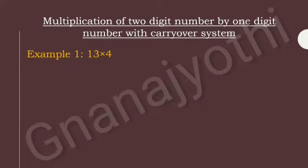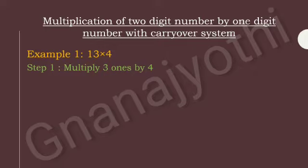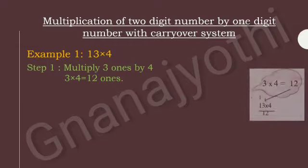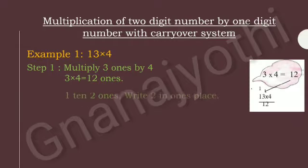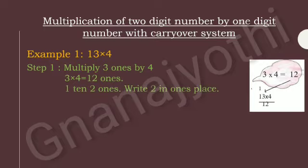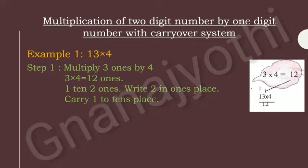Look at Example 1: 13 into 4. To solve this, we have 2 steps. Look at Step 1. First, multiply 3 ones by 4. If we multiply 3 ones by 4, we will get 12 ones. So, let us write 12 ones as 1 ten and 2 ones. We will write 2 in the ones place and carry 1 to the tens place.